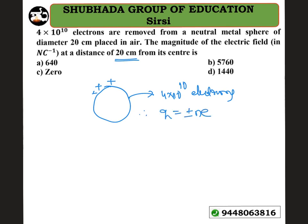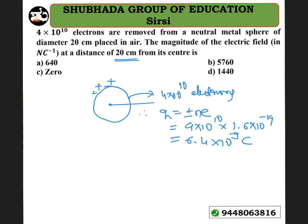The charge is Q = ne, where n = 4 × 10¹⁰ and e = 1.6 × 10⁻¹⁹ coulomb. That gives Q = 6.4 × 10⁻⁹ coulomb. Now we need to find the electric field at a distance of 20 cm from the center.